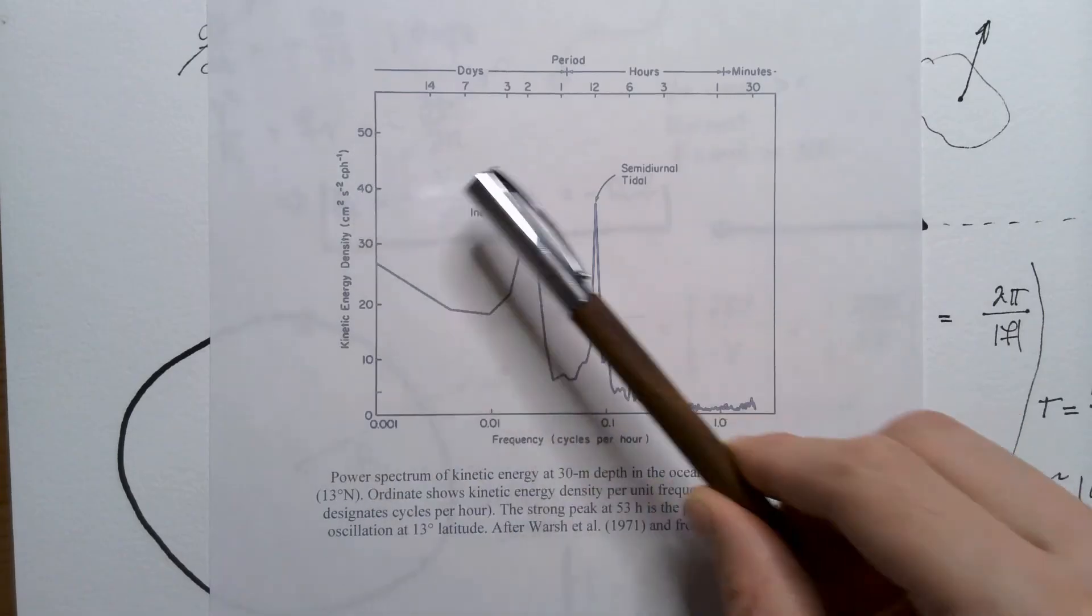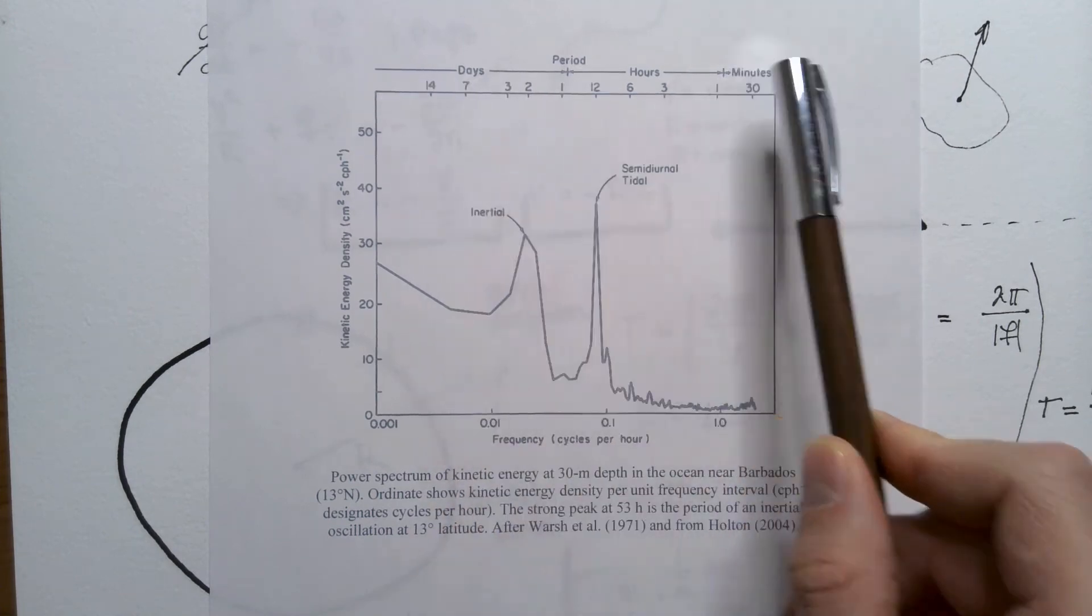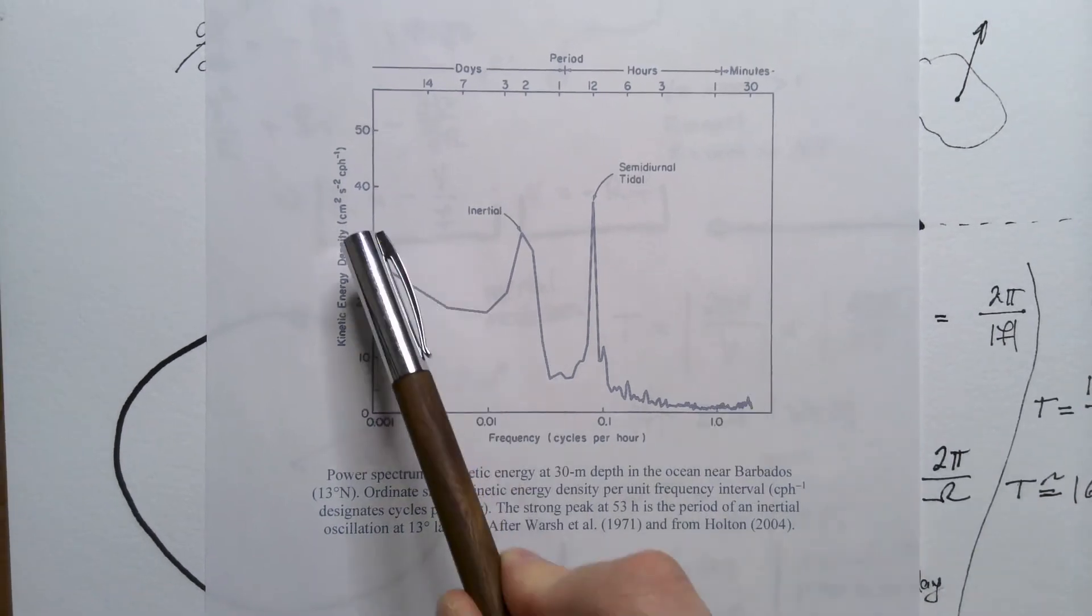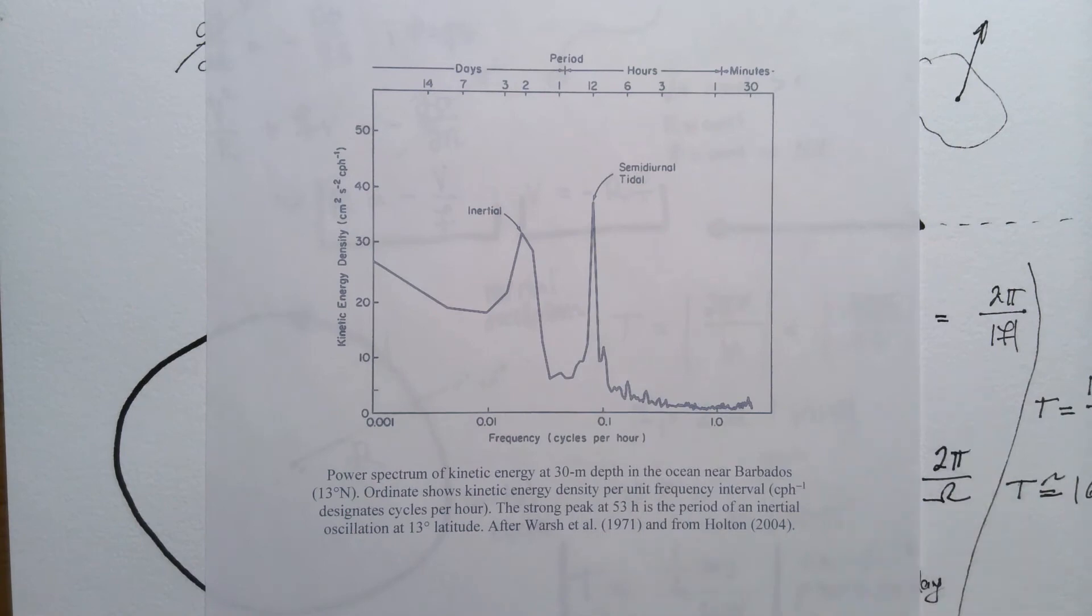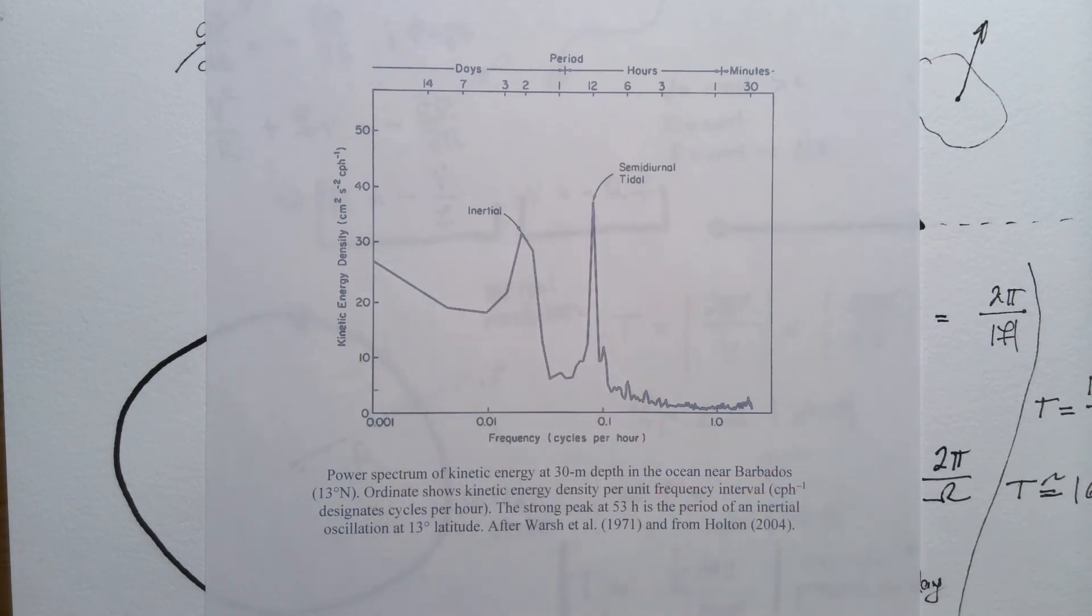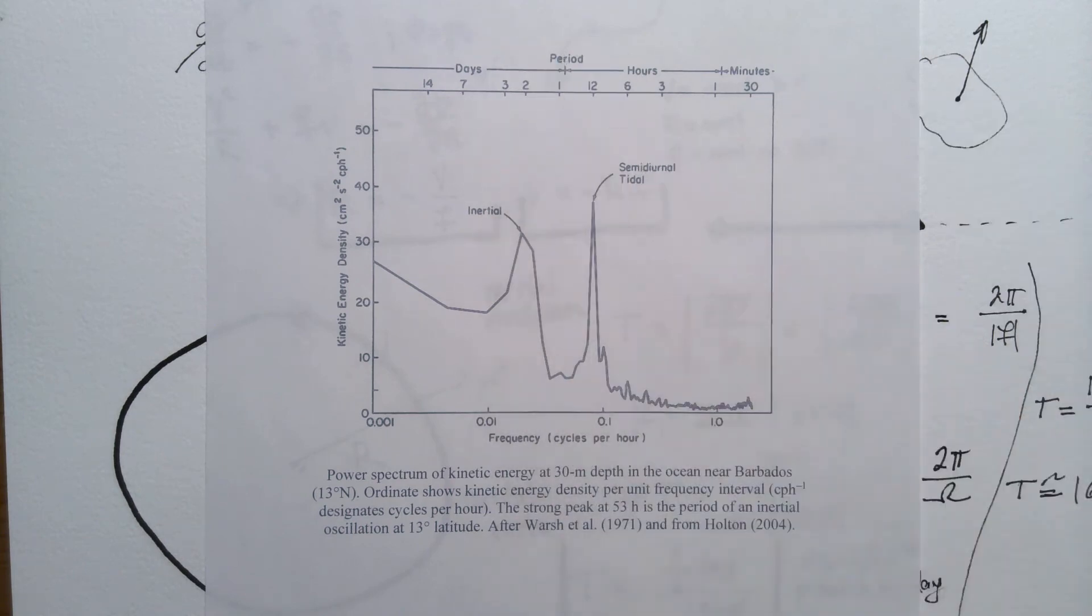Here, on the y-axis, we have energy content expressed through power spectrum of kinetic energy in the first 30 meters of the ocean near Barbados. And on the x-axis, primary x-axis, we have frequency, and on the secondary x-axis, we have period. Now, I will not go into details of power spectral analysis, I will have videos on that in the future, but just imagine that peaks correspond to peaks in energy associated with given frequency, or associated with given period, because frequency and period are related.